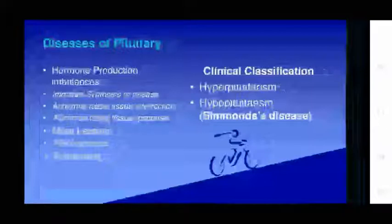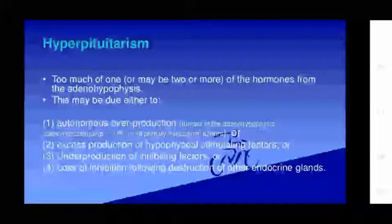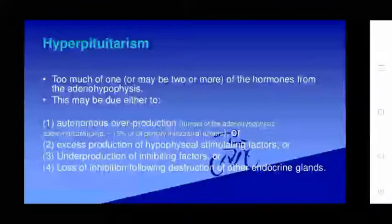Pituitary diseases involve hormone imbalance impacting target tissues. Conditions include abnormal target tissue responses, mass lesions (non-functioning or functioning), clinical infections, hyperpituitarism, and Simon's disease. Hyperpituitarism involves too much of one or more hormones from the adenohypophysis. This may be due to autonomous overproduction from tumors (adenoma or carcinoma), excess hypothalamic stimulating factors, or loss of inhibiting factors from destruction of other endocrine glands.